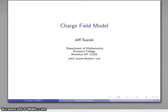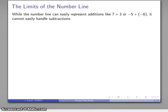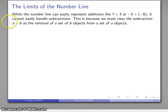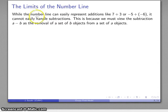Here we'll introduce a new way of representing integers known as the charge field model. The basic problem is that the number line is actually very limited in what you can do with it. You can easily represent some additions, but the problem is that you can run into difficulties when trying to represent subtractions. We have to view subtraction A minus B as the removal of a set of B objects from a set of A objects. If A is smaller than B — if we're trying to take away more objects than what we have — then the ability to use the number line is severely limited.